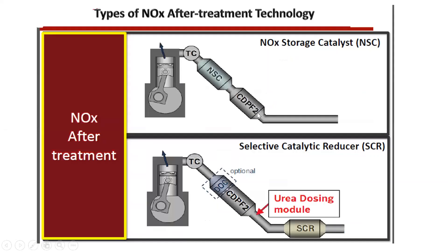These are the other types of systems we have — nitrogen oxygen emission reduction technology. We have NOx storage catalyst, and this catalyst will convert NOx to nitrogen. It can be used before the DPF as well, but normally we go with the second system called the SCR system.